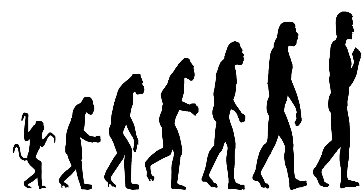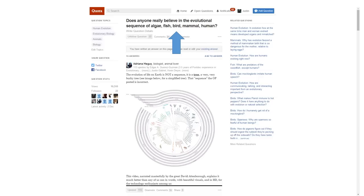So let's get to the question I need to answer. I saw this in the Quora forums and I did take the time to answer it. Word for word, the question is: does anyone really believe in the evolutional sequence of algae, fish, bird, mammal, human? I did answer this question on the forum and you can search for my answer. In this video I will be presenting this as straightforward as possible. There are some things that are wrong with this question in terms of the science. So let's get to it.